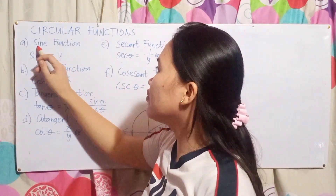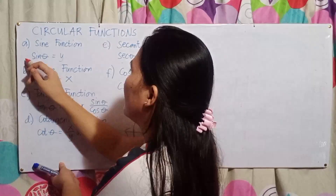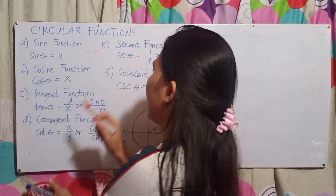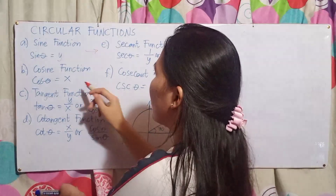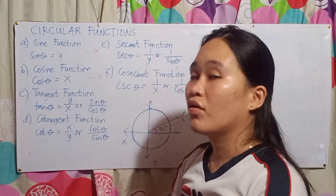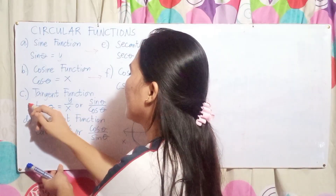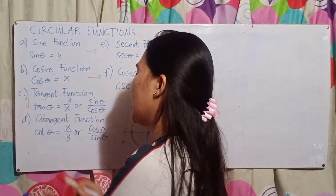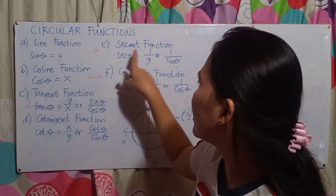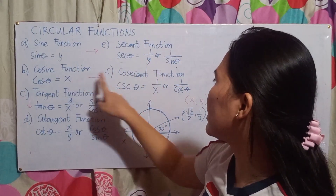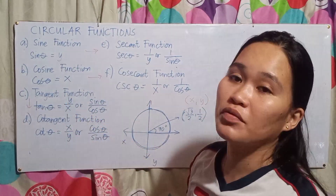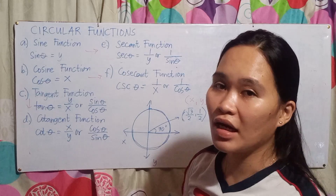So the sine function's reciprocal is cosecant, the cosine function's reciprocal is secant, and tangent's reciprocal is cotangent. Notice: y and 1 over y, x and 1 over x — they are just reciprocals of each other.